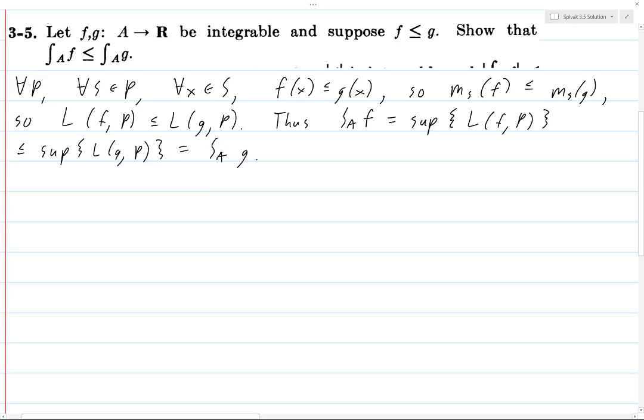And so, of course, we could have used M and U instead of lowercase m and L. Because what would change? We would have F of X is less than or equal to G of X, and you take the supremum over all X in S, and you get capital M_S(F) is less than or equal to capital M_S(G).